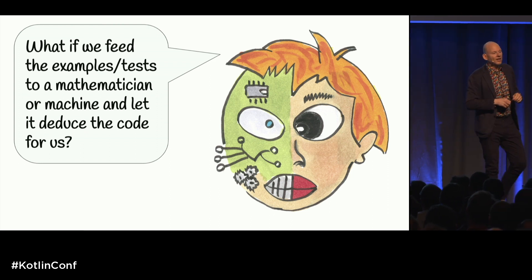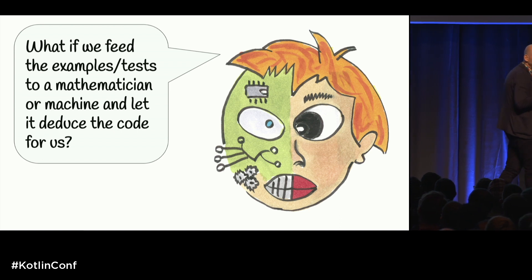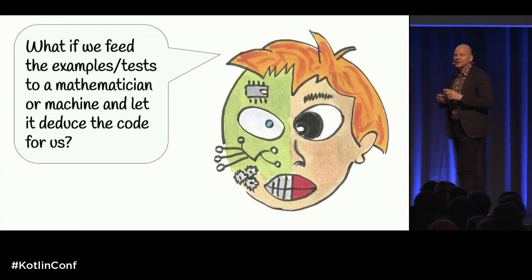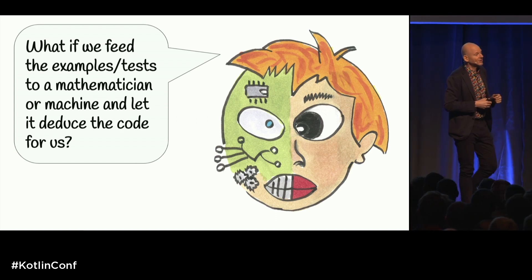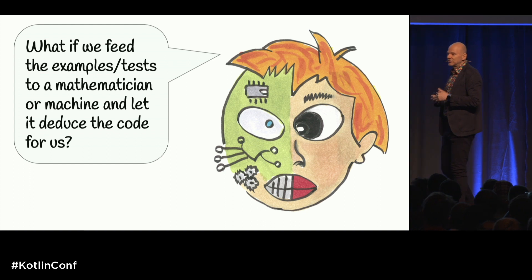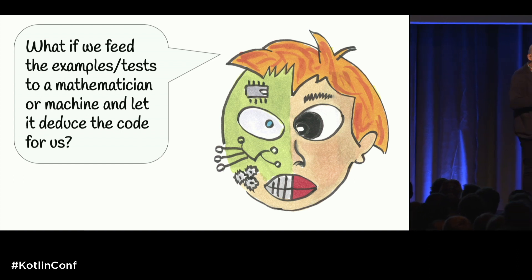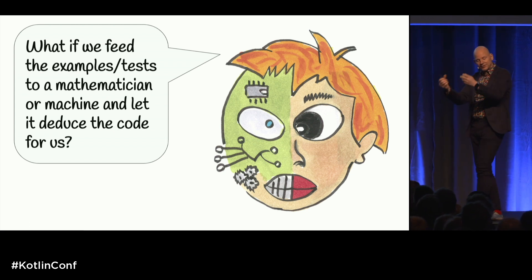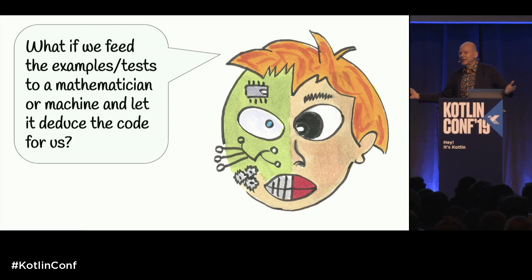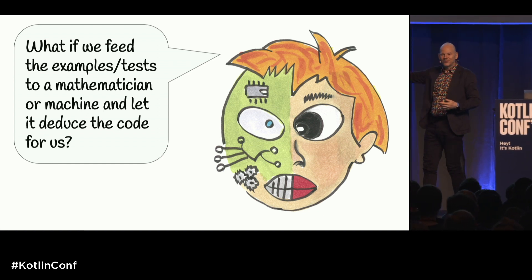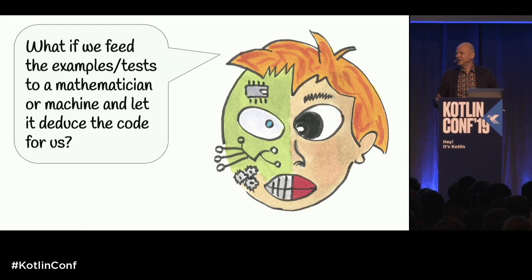If you read the description of gradient descent, it's very similar to test-driven development. What you do is take an example and mutate something — the parameters of your function a little bit — to make the test run. Then you take the next example and mutate your weights a little bit. The way you know how to mutate your parameters is by taking derivatives. So in some sense, test-driven development is extremely close to gradient descent.